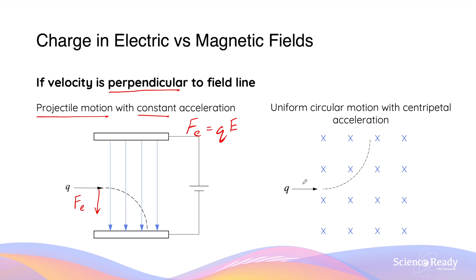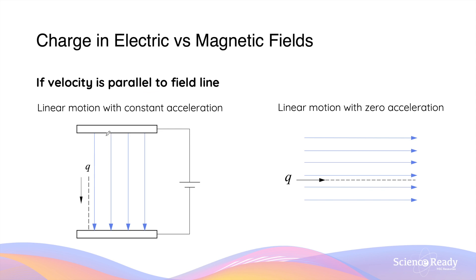In contrast, inside the magnetic field, if the velocity of the charged particle is perpendicular to the field lines, it will undergo uniform circular motion with constant centripetal acceleration. If the velocity is parallel to the field lines inside the electric field, the charged particle will undergo linear motion with constant acceleration. Inside the magnetic field, the charged particle will also undergo linear motion, but this time with no acceleration.